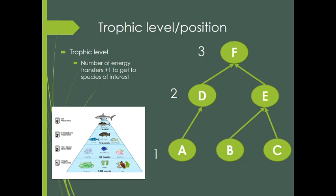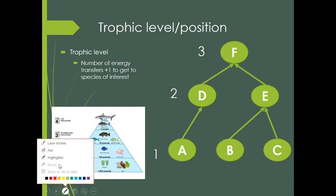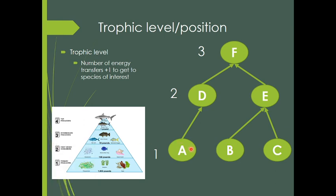So what is a trophic level? A trophic level is basically what we generally think of as primary producers, herbivores, predators, top predators. But formally, it is defined as the number of energy transfers to get to a species of interest plus one. So species D is an herbivore — one link plus one — it's trophic level two. Plants are trophic level one, herbivores trophic level two, primary predators trophic level three.